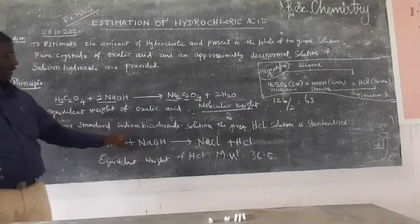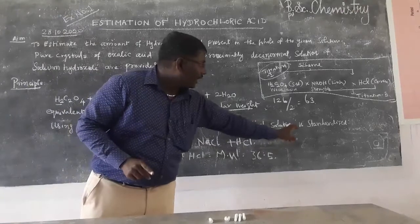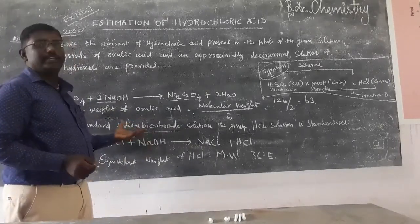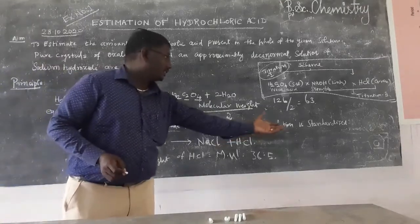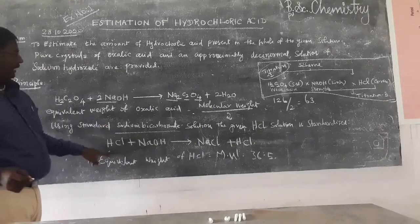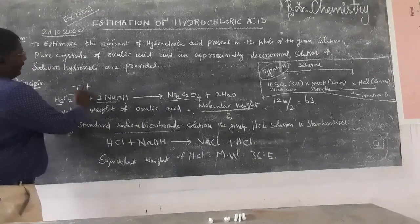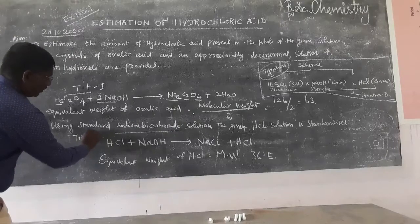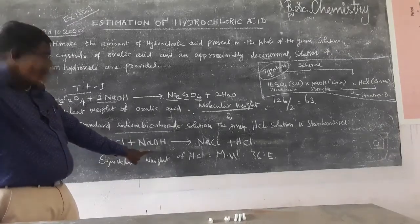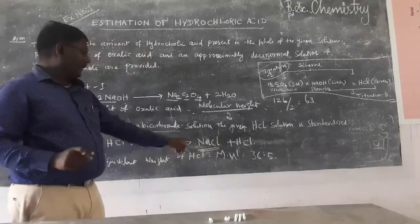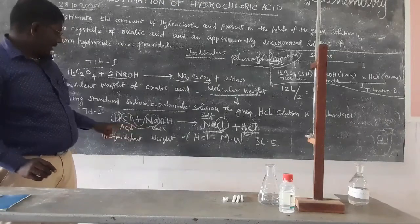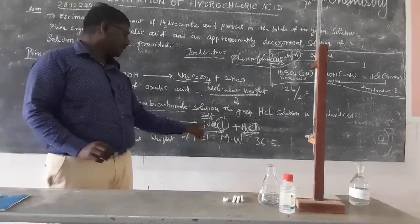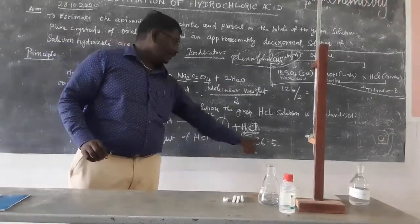Using the standardized sodium hydroxide solution, the given HCl solution is standardized. We have sodium hydroxide. Titration 2: the given HCl solution is titrated against sodium bicarbonate solution. This is a strong acid versus strong base reaction. The equivalent weight of HCl equals its molecular weight, which is 36.5.